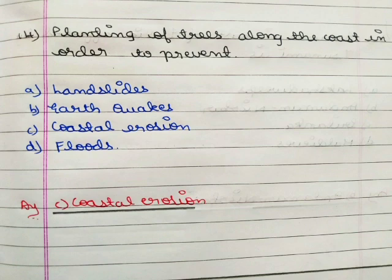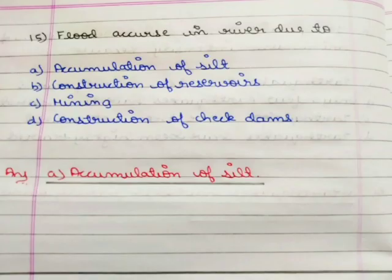Next question: planting of trees along the coast is done in order to prevent option A landslides, option B earthquakes, option C coastal erosion, option D floods. The correct answer is option C coastal erosion.